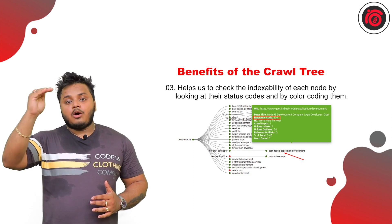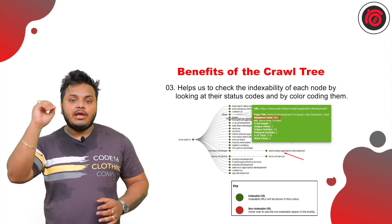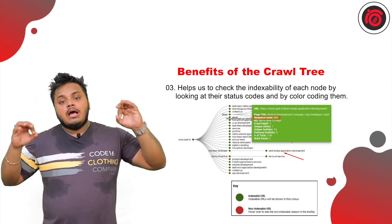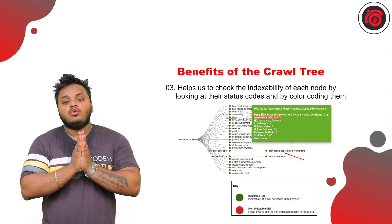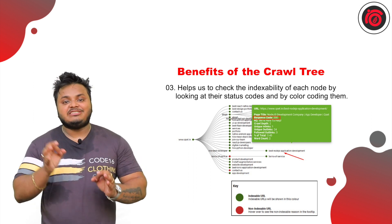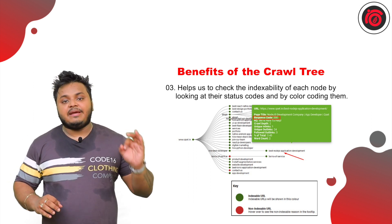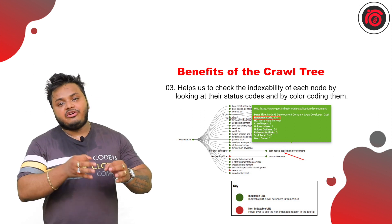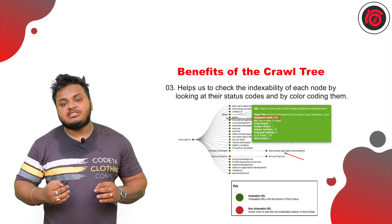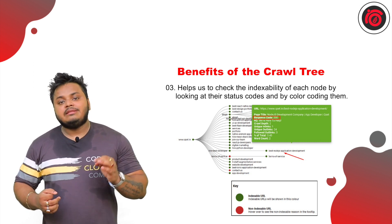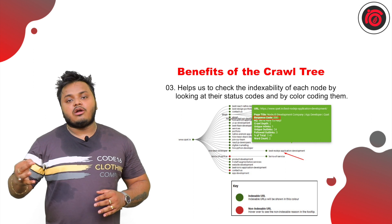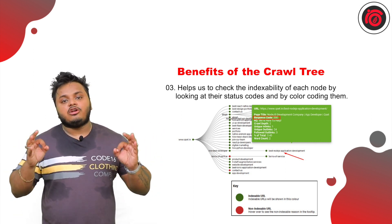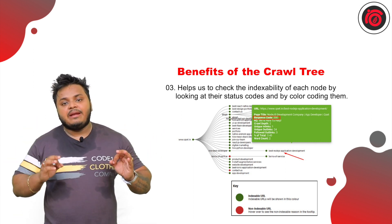Last but not least, the crawl tree provides a proper list with blue, yellow, and red dots on pages indicating their status: pages with a 200 status code that are perfectly fine, pages with redirection issues, mixed chain redirections, canonical issues, or 404 errors.